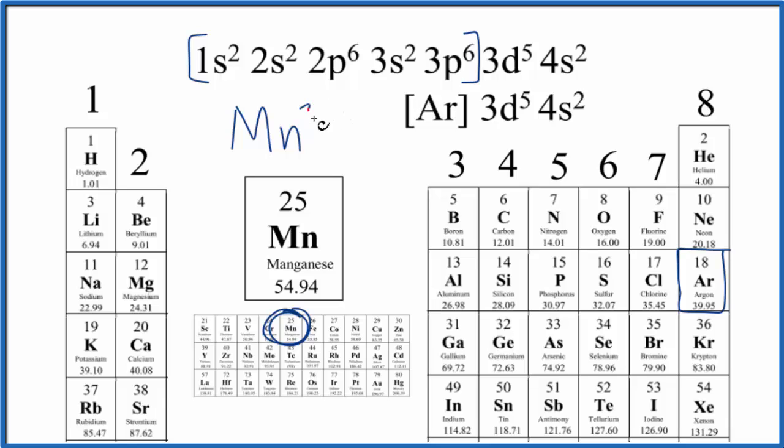If it lost 3, it would become 3+. It would lose these 2. This would become 0. And then this would become 4.